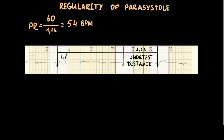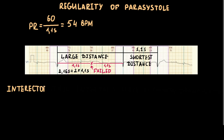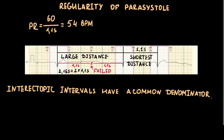Due to the regularity of parasystolic contractions, even when conduction fails because of exit block, the distances between parasystolic contractions — whether successful or failed — remain stable. As a result, any larger distance between parasystoles consists of a multiple of the shortest distance. In our example, the large distance equals twice the shortest distance, meaning one parasystolic activation failed. Therefore, large distances can be divided entirely by the shortest interparasystolic interval — this common denominator is the second criterion of ventricular parasystole.